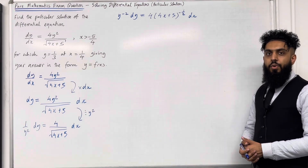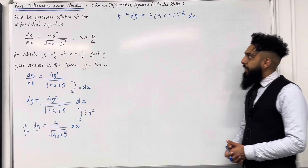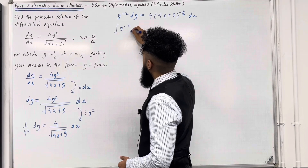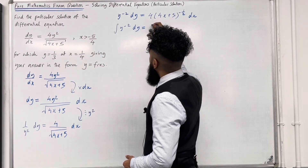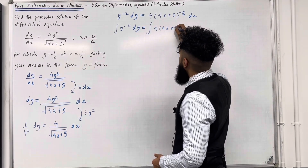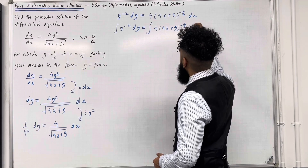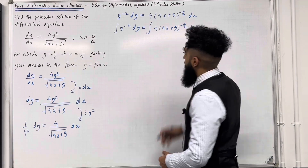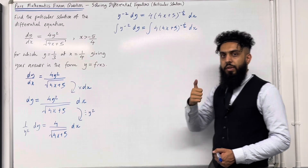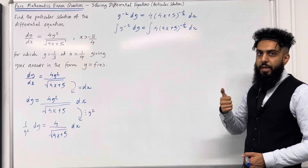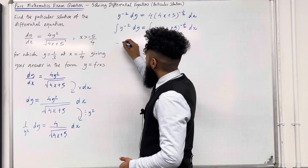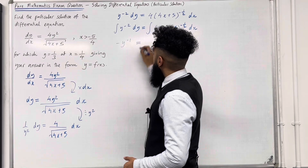Now I can take the integral on both sides. So I've got the integral of y to the power minus 2 dy equal the integral of 4 lots of (4x plus 5) to the power minus 1 half dx. For the left-hand side, we use standard integration: add 1 to the power and divide by the new power. So this becomes minus y to the power minus 1.